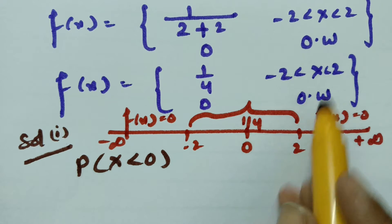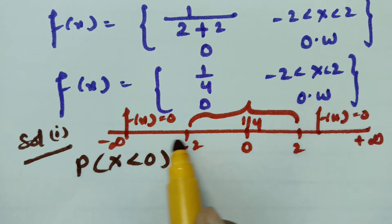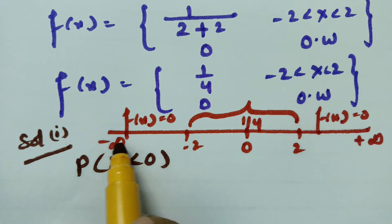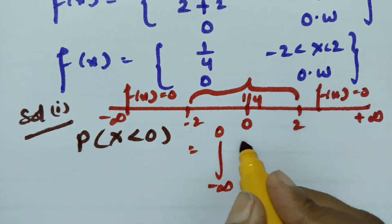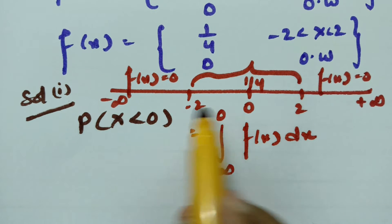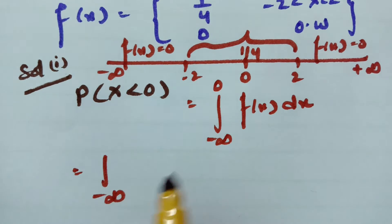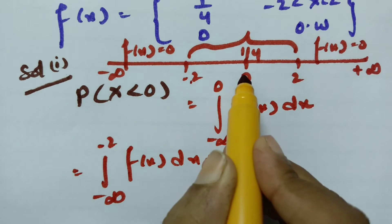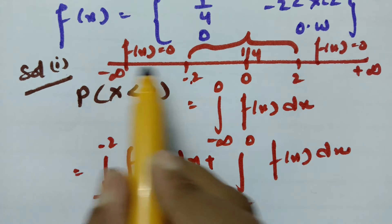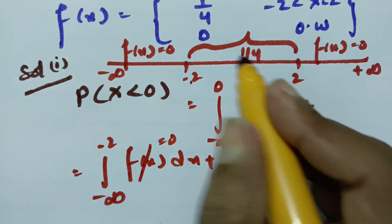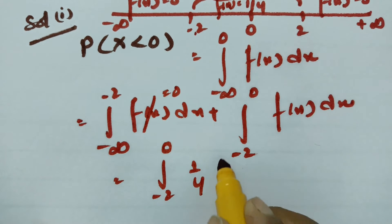In between minus 2 and plus 2 the function value is 1 by 4. We need the value of x less than 0, which means from minus infinity till 0. Since there is minus 2 in between, I am going to split this: minus infinity to minus 2 f of x dx, plus minus 2 to 0 f of x dx. From minus infinity till minus 2, the value of f of x is 0, and here f of x is equal to 1 by 4.